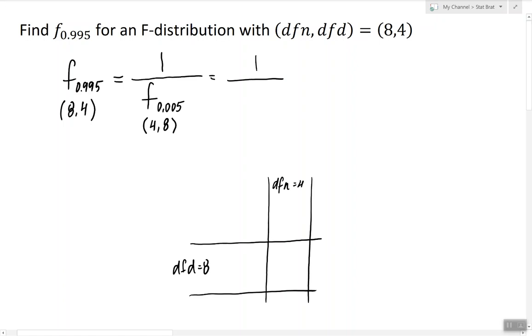And at the intersection we are going to look for the value that corresponds to alpha 0.005, which is 8.81.